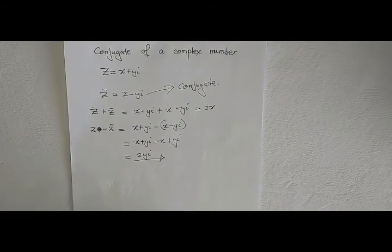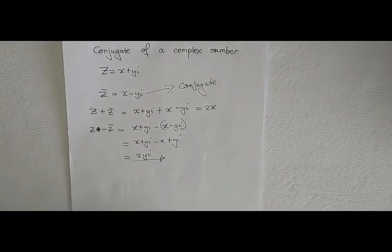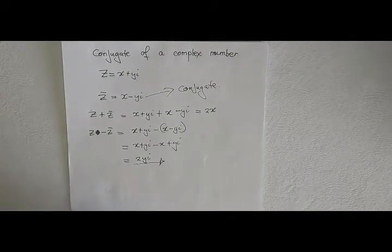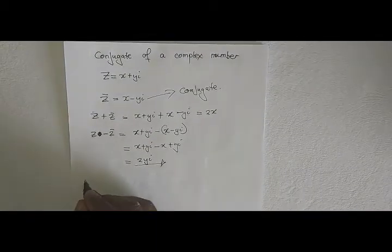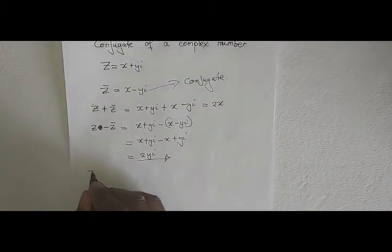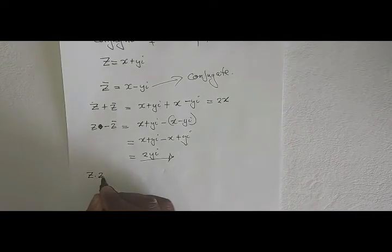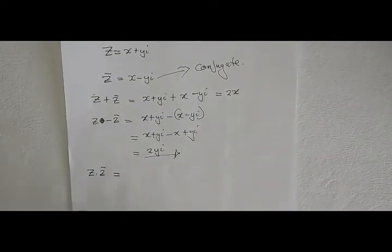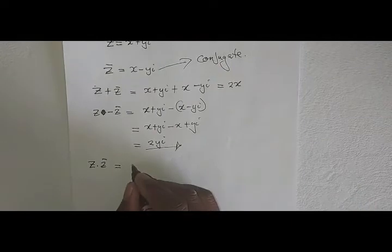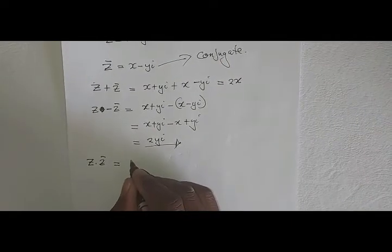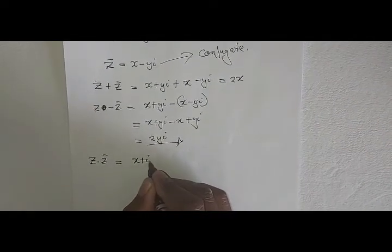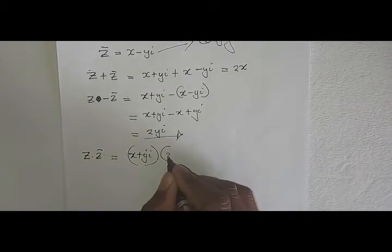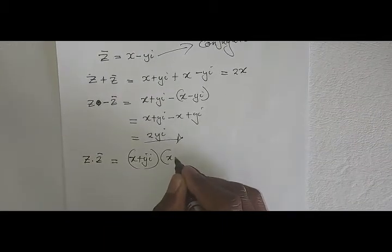Let's also look at what happens when you multiply a complex number with its conjugate. Z multiplied by Z-bar equals X plus Yi multiplied by X minus Yi.